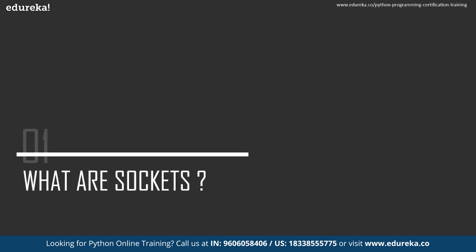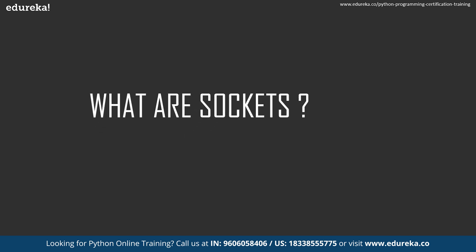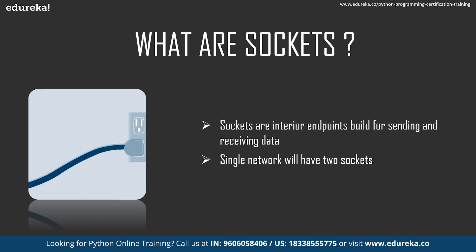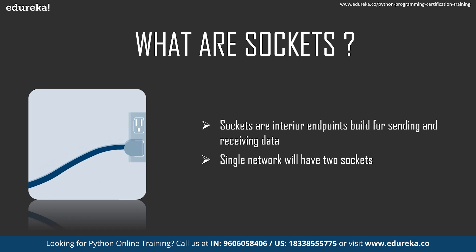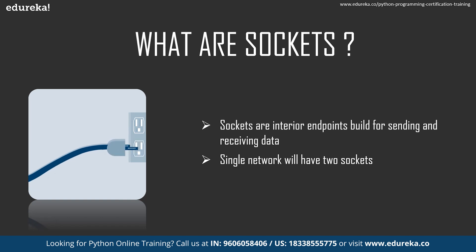So what exactly are sockets? Sockets are basically the interior endpoints used for sending and receiving data. By default, a single network has two sockets, one for each communication device. These sockets are a combination of IP address and port numbers. A single device can have n number of sockets based on the port numbers being used. Different ports are available for different protocols — for example, HTTP uses port 80 whereas FTP uses port 20.